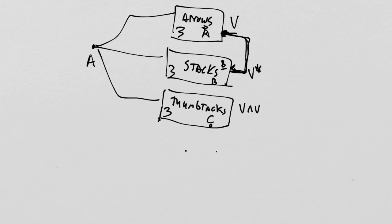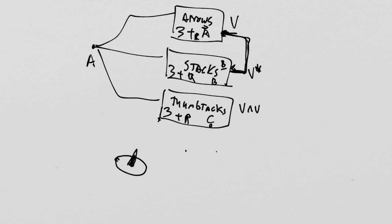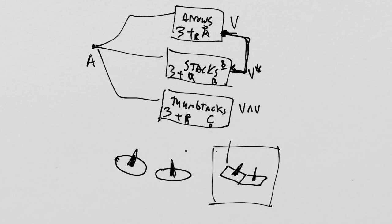Thumbtacks, like all these objects, have their own algebra — you can add them and multiply them by real numbers. For thumbtacks, the addition is geometric. If I have a thumbtack like this and a thumbtack like this, I add them by first turning them into nice rectangles so they share an edge, putting the arrows on the two edges, and then wedging them between two parallel planes. It's all geometry here — if you want visualization, you have to stick with the geometry.